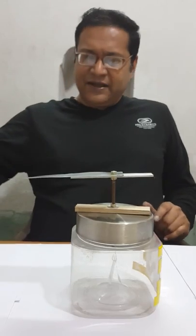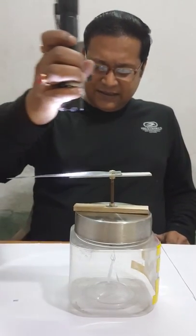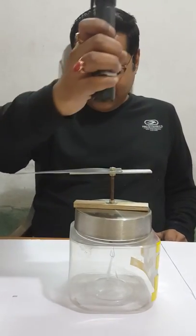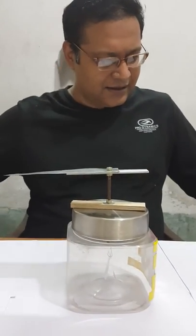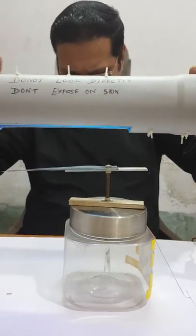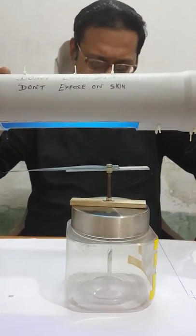What happens if I bring a torchlight over here? You can see there is no change in the divergence of the leaf. Now I am bringing a UV light and holding it over it. You can see the leaf converges immediately.